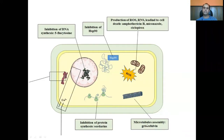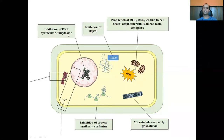Among these, amphotericin B, griseofulvin, and flucytosine are relatively more used. Miconazole, amphotericin, and griseofulvin are commonly used. Flucytosine is relatively less used and is only used in certain cases alongside amphotericin B. Other drugs do not have widespread use.